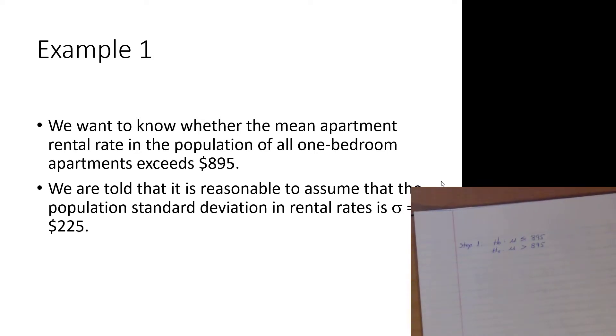So it's important that we label the statements H0 and HA. It's important that we also have a population parameter that we're measuring or testing. Step two, what's our alpha?